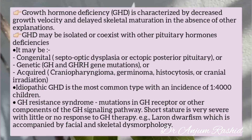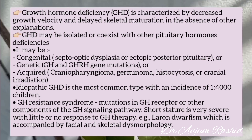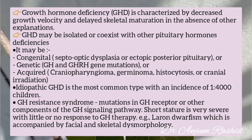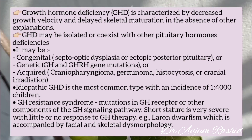Idiopathic growth hormone deficiency is the most common type, with an incidence of one in four thousand children. Growth hormone resistance syndrome can occur due to mutation in the growth hormone receptor or other components of the growth hormone signaling pathway.